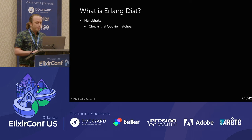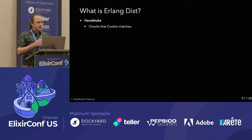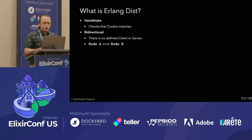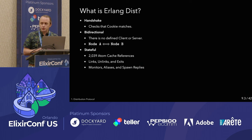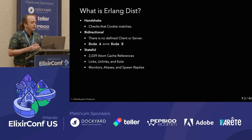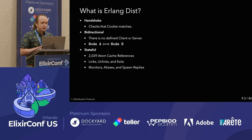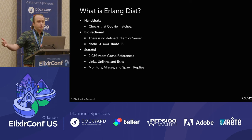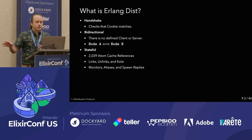The Erlang dist protocol is fairly simple. It starts off with a basic handshake that checks both nodes are using the same cookie. It's bidirectional — there's no defined client or server — and it's stateful. There's a little over 2,000 atom cache references, so if you're sending the same atom repeatedly, you just send a reference rather than the whole atom. Links, unlinks, exits, monitors, aliases, and spawn replies are all stateful, so if the connection goes down, those things get dropped — if you have a link to a process on another node and the connection drops, you get an exit message regardless of whether the other process actually went down.